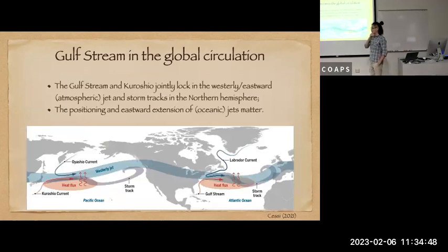When you talk about air-sea interaction, there's this recent schematic by Chassignet 2021 where the Gulf Stream and Kuroshio both jointly synchronize—she uses the word synchronize—they join in a synchronous manner to affect the westerly jets and hence the storm tracks. Based on these two examples, what I'm trying to say is that positioning and eastward extension of the oceanic jets, of which the Gulf Stream is one example, matter. That's why we want to improve our representation of the Gulf Stream in coarser ocean models.